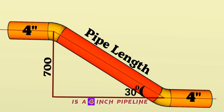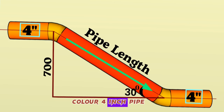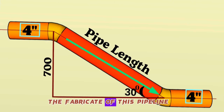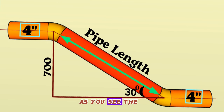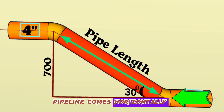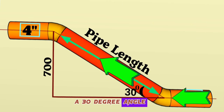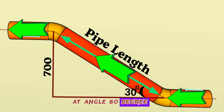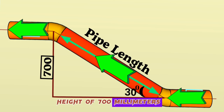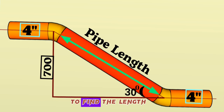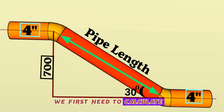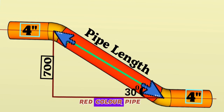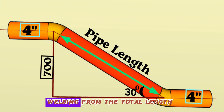As you can see, this is a 4-inch pipeline. We need to calculate the length of the red-color 4-inch pipe piece used in the fabrication of this pipeline. The pipeline comes in horizontally, then goes up at a 30-degree angle, and continues horizontally again at a 60-degree angle with a height of 700 millimeters. To find the length of the red pipe piece, we first need to calculate the distance between the centers of the pipe elbows, then subtract the elbow lengths and welding gaps from the total.